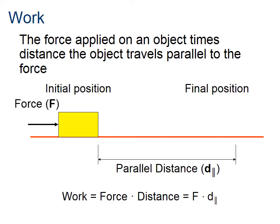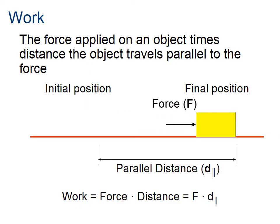To put everything together, we need to look at a form of energy called work. The definition of work is a force, F, times some distance. The parallel signs there just mean it's a parallel distance — the distance is parallel to the applied force. So if we push a box from an initial position to its final position, the amount of work we do equals that force F times that distance. The units are newtons times meters, which equals joules. You can write newton-meters or joules — that's the metric equivalent.